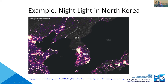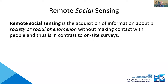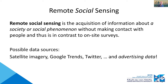So what is remote social sensing? It's pretty much the same thing, but what you're sensing are not trees, glaciers, or lights — but people. You're trying to sense a society or social phenomenon more broadly. You could use satellite imagery of economic activities, Google Trends, or Twitter, but in this talk I'll focus on how you can do remote social sensing using advertising data.